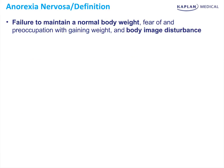Anorexia nervosa is defined as a failure to maintain a normal body weight, driven by a fear or preoccupation with gaining weight. There is a body image disturbance at the core — an unrealistic self-evaluation as overweight. The patient looks in the mirror even though she's 90 pounds and sees 900 pounds, believing she is morbidly obese.